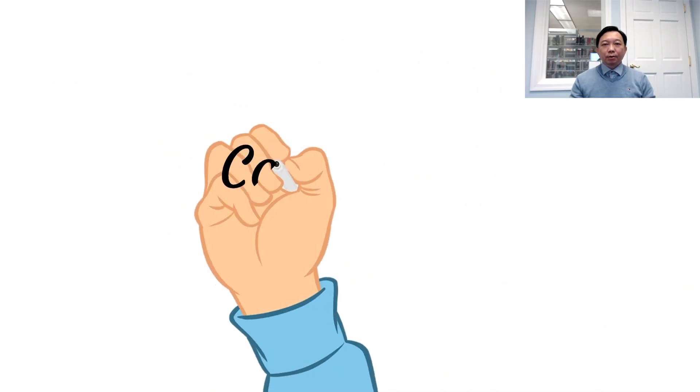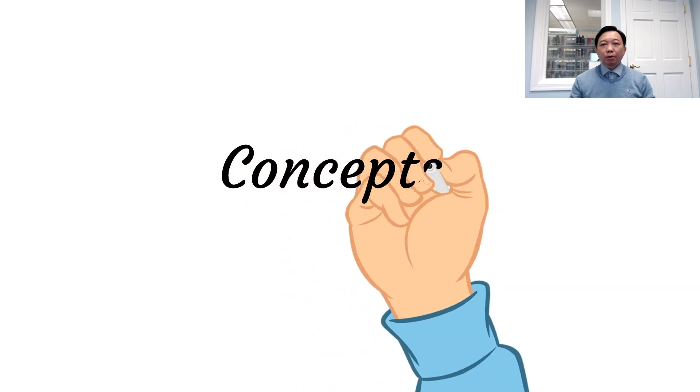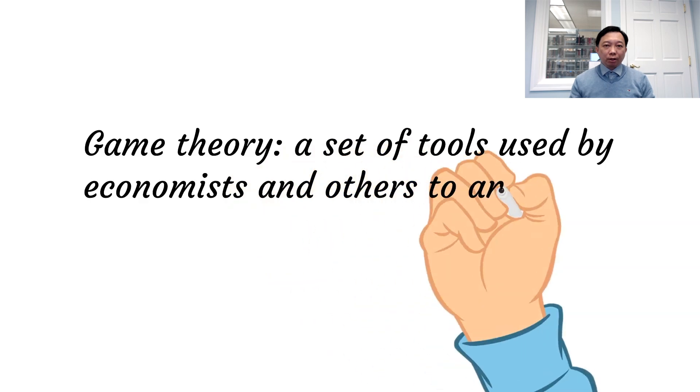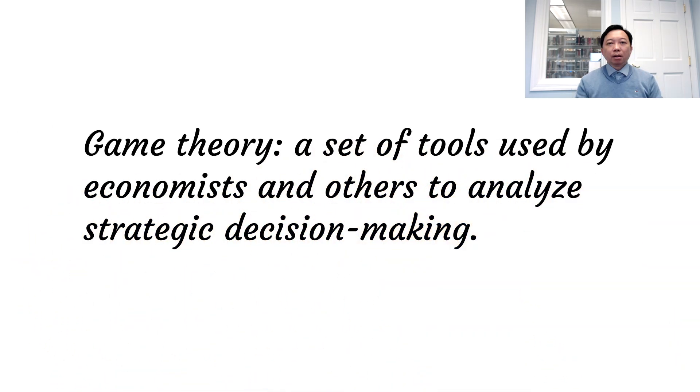Game Theory is a set of tools used by economists to analyze strategic decision making. Game Theory has many practical applications. Economists use it to study how oligopolistic firms set prices, quantities, and advertising levels, bargaining between unions and management or between the buyer and seller, and for many other economic interactions.